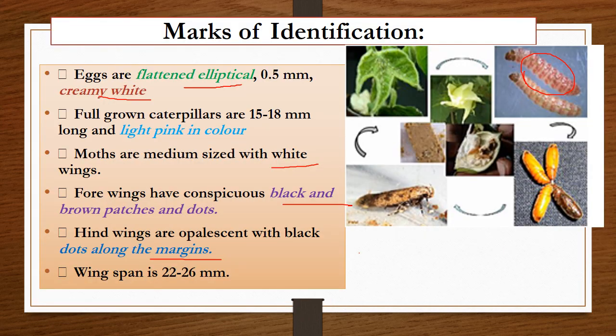Coming to the marks of identification: the eggs are flat and elliptical in shape with creamy white color. The larva is light pinkish in color, 15 to 18 mm long. The moth is medium-sized with whitish wings, and on their forewings it contains black and brown patches. The hindwings are hopefully scent with black dots along the outer margin, and the wingspan is 22 to 26 mm.